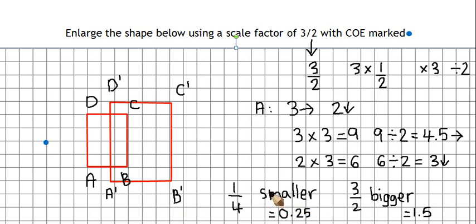So here, a scale factor of a quarter, we've got a decimal between 0 and 1, and that made the shape smaller. If we've got 3 halves or something like that, a decimal that's bigger than 1, my shape ends up bigger.